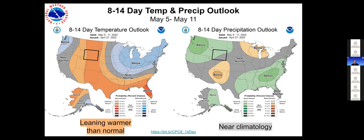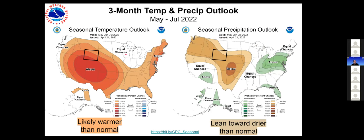Looking at the seasonal outlook, the three-month outlook from May through July: there's a likely above-normal warmth, especially the southern half of the state and the southwest corner. Even the northern portions of the state have a lean to above-normal temperatures. For precipitation, despite the near-term looking fairly wet, the overall seasonal outlook is still to have below-normal precipitation over that three-month period. That would not help with the longer-term drought areas.